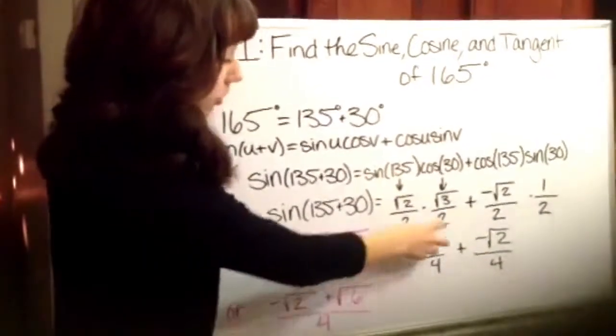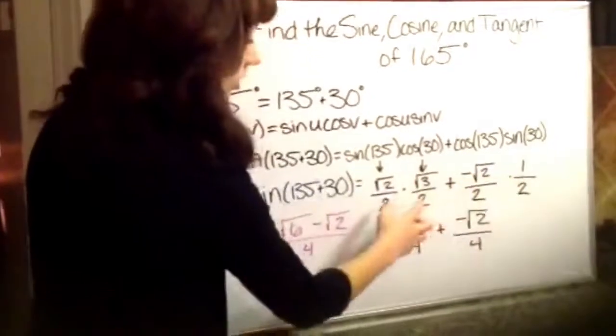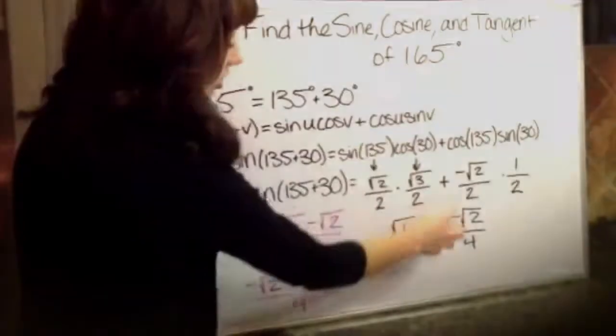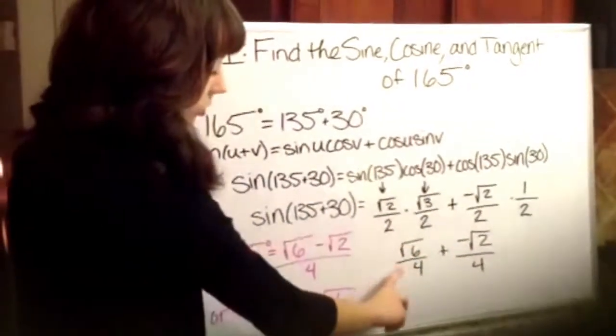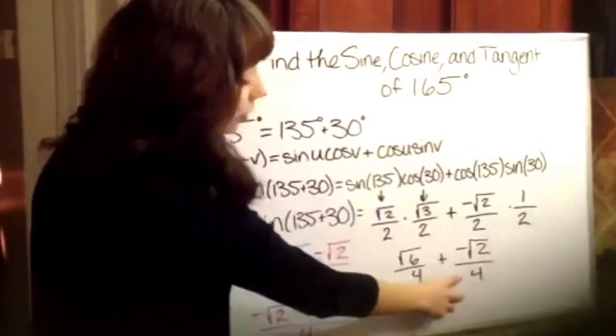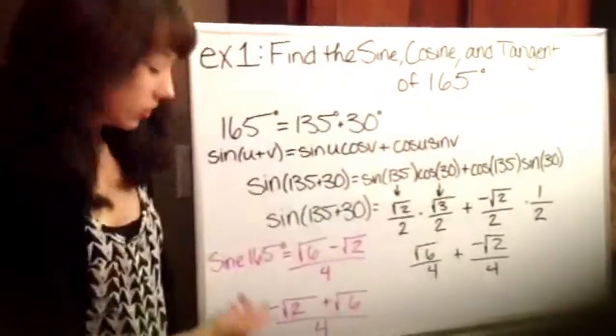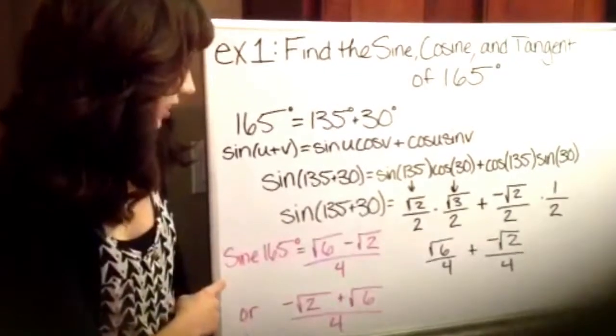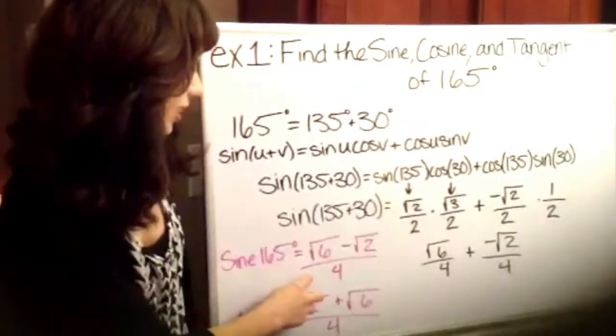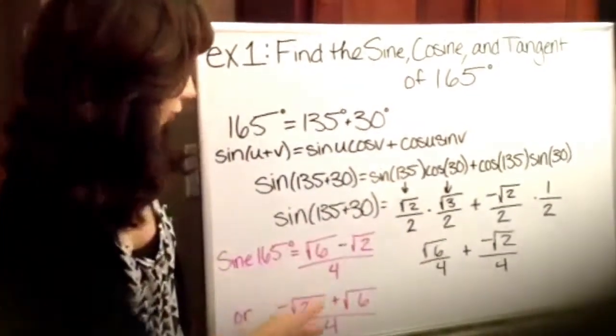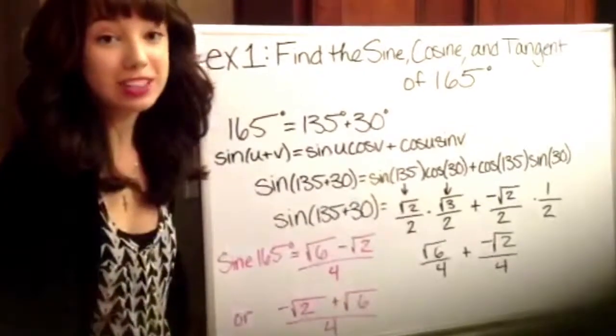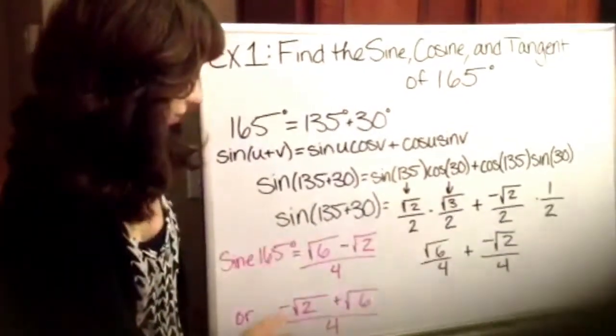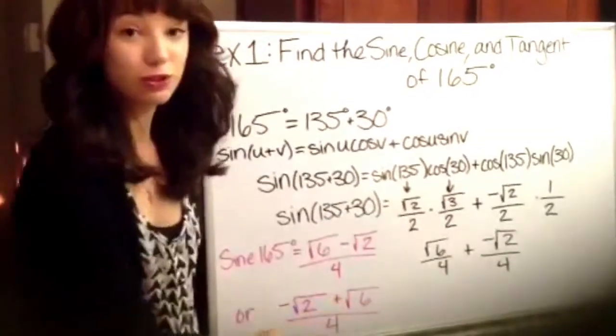You want to remember that these are multiplying, those two and these two, and there's also an addition sign. So that makes you get the square root of 6 over 4 plus the negative square root of 2 over 4. And you want to combine that so you get the sine of 165 is equal to the square root of 6 minus the square root of 2 divided by 4. Or you could just flip it around because it's the same thing and you could get negative square root of 2 plus the square root of 6 over 4.